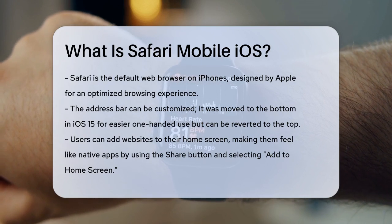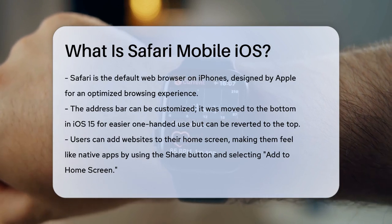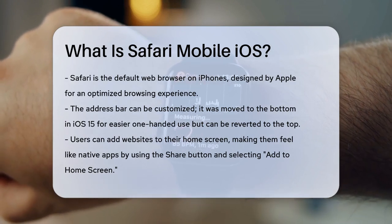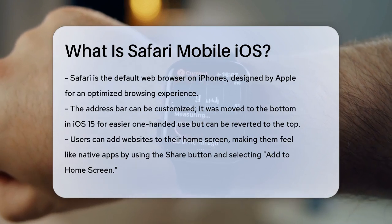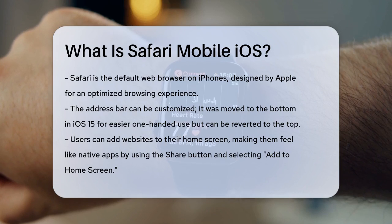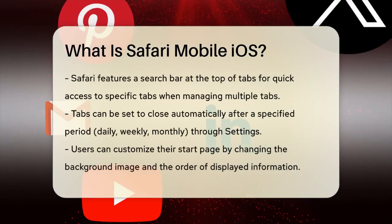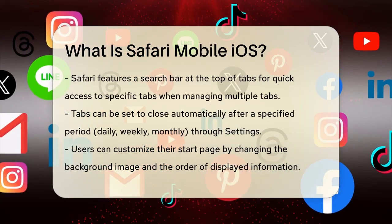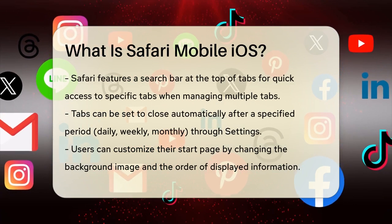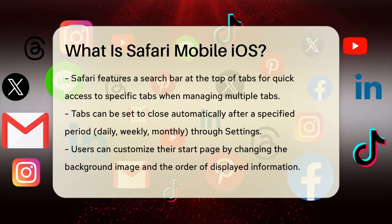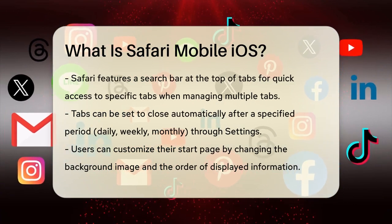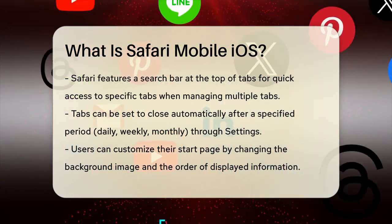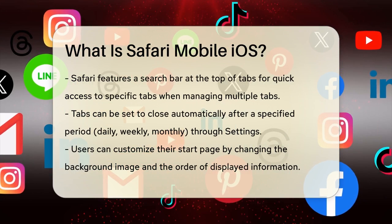Safari also lets you add any website to your home screen, giving it a feel like a native app. To do this, simply go to the website in Safari, tap the Share button, and select Add to Home Screen. This feature has been around since the early days of the iPhone and is still useful today.